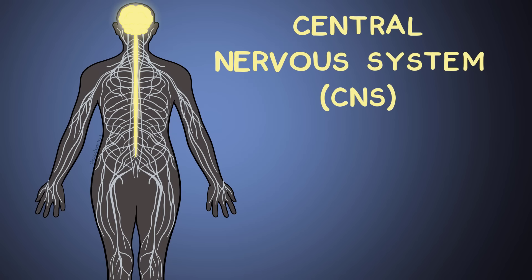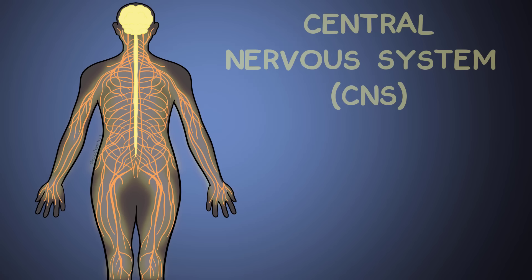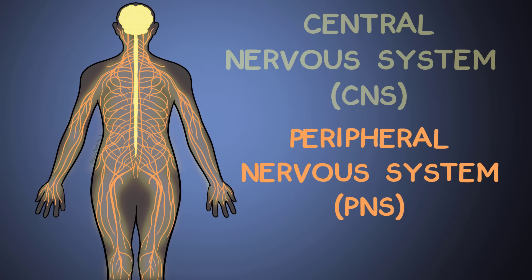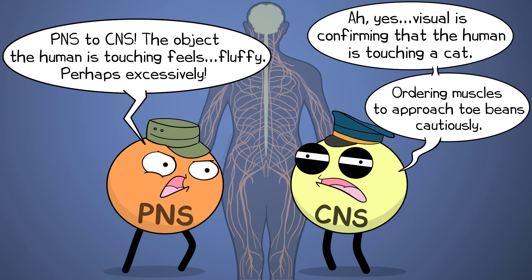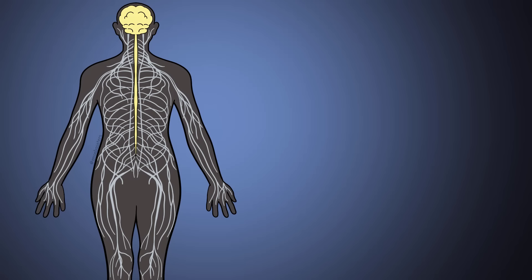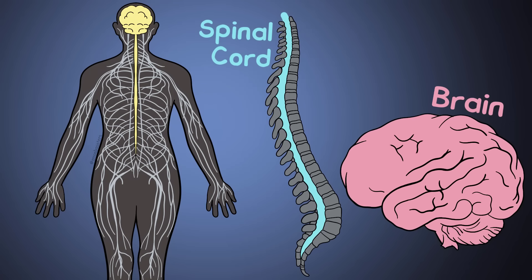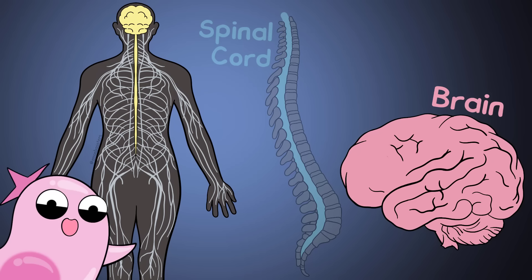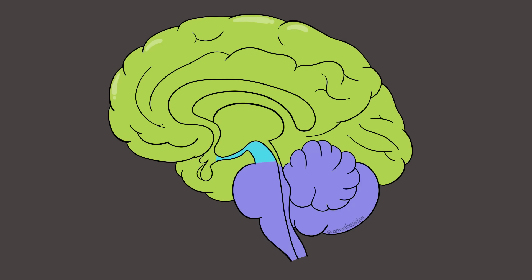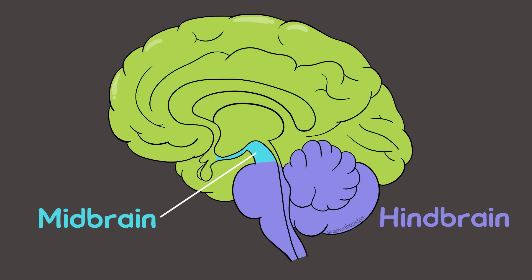The central nervous system (CNS) consists of the brain and spinal cord. The peripheral nervous system (PNS) consists of all other components of the nervous system, such as nerves throughout the body. The PNS can provide sensory information for the CNS, while the CNS can process that information and act as a command center, executing motor responses or regulating body mechanisms. The CNS consists of the spinal cord and brain, which we can divide into three general regions: the hindbrain, midbrain, and forebrain.